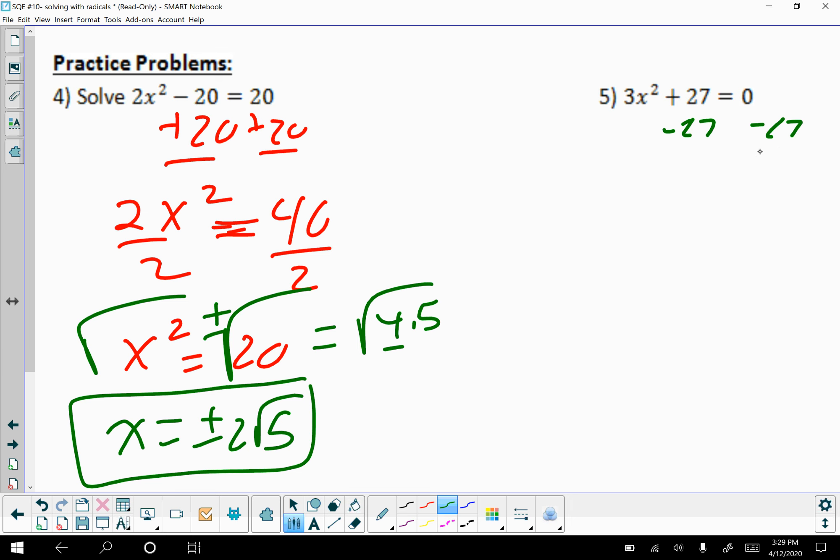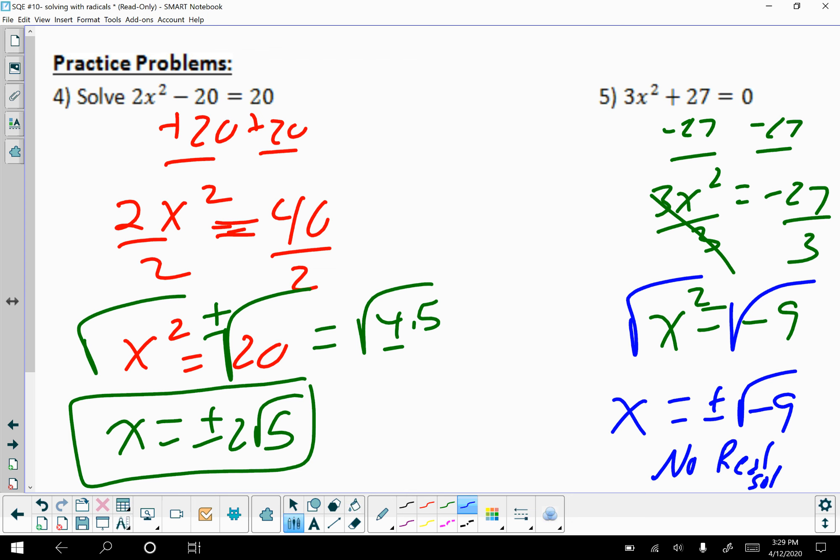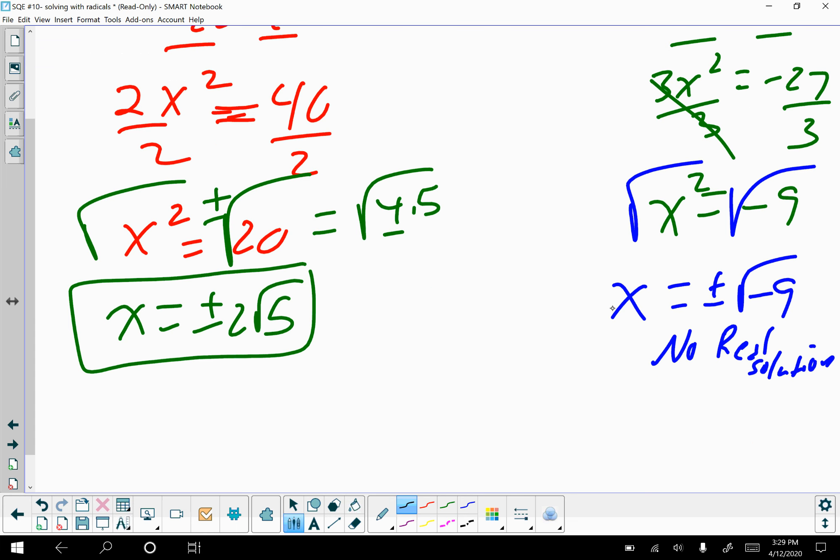Let's see here. Subtract 27, subtract 27. Divide by 3, divide by 3. Uh oh. But I have a square root of a negative. This is going to be no real solution. Because I can't take the square root of a negative number. In later math classes, you will actually get this to become this as an answer. I represents that we would have had a negative under the square root. But we're not doing that here. So we're not going to worry about this at this point.